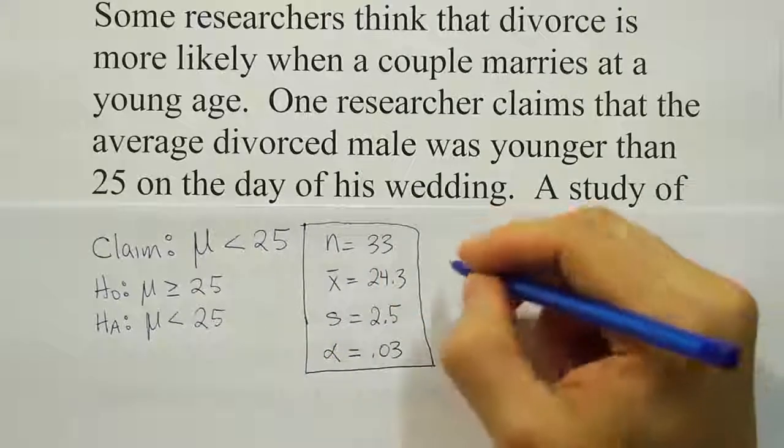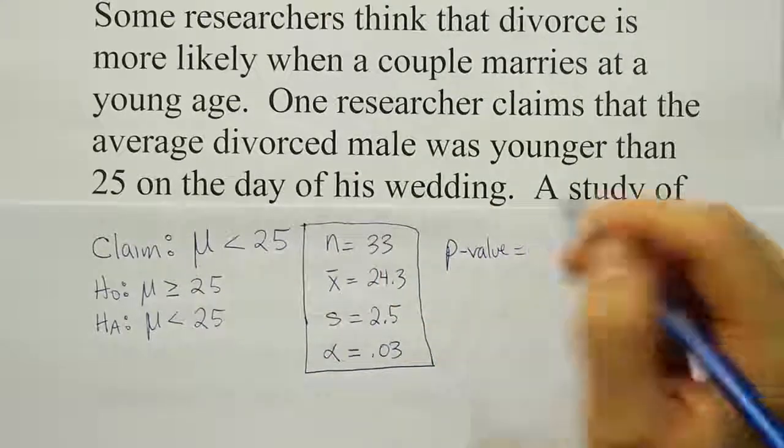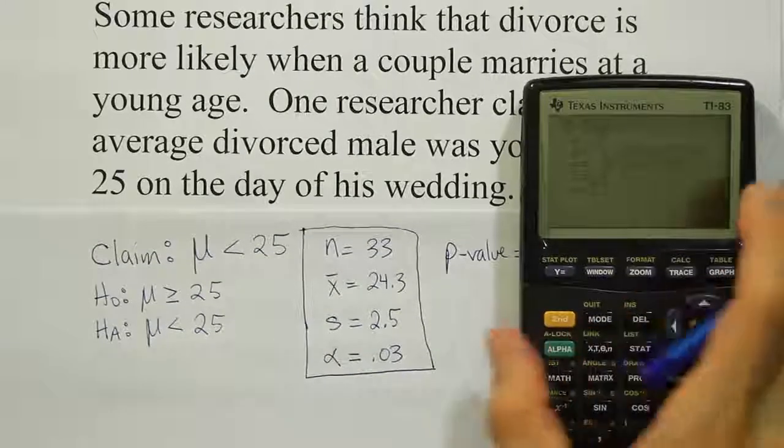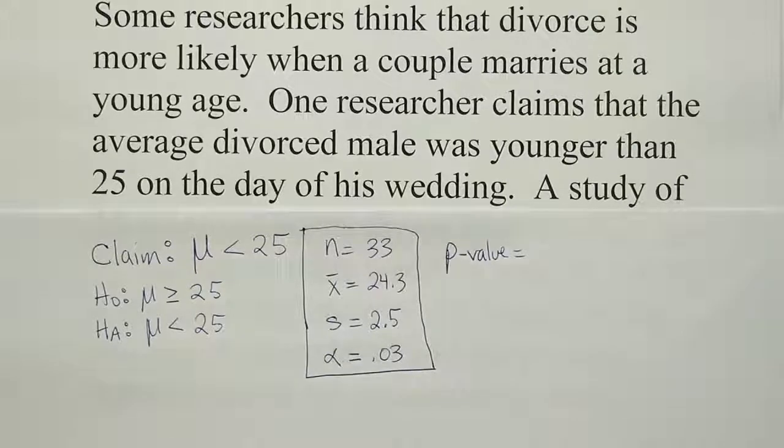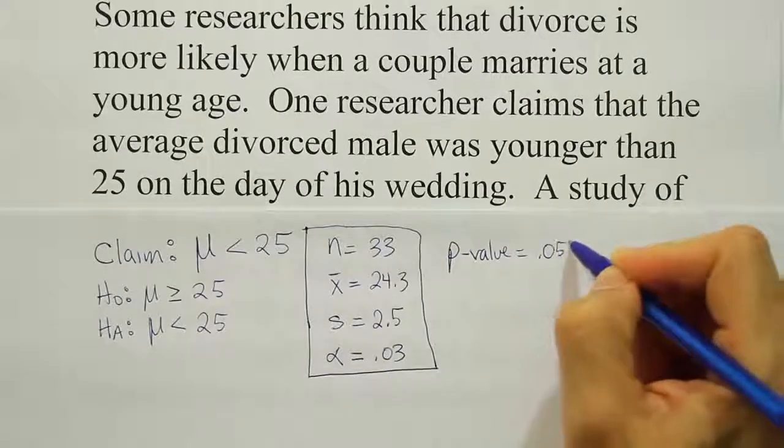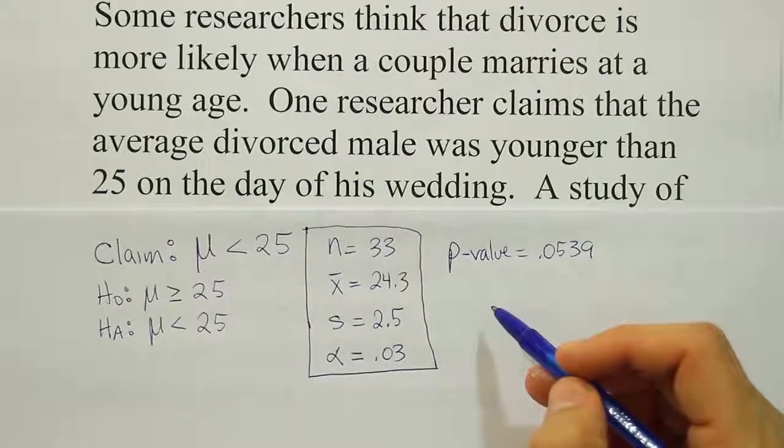So now I know my p-value is, if you look at it here in the calculator, it's .0539. Now, with that value known, we compare it against alpha to finish the problem.